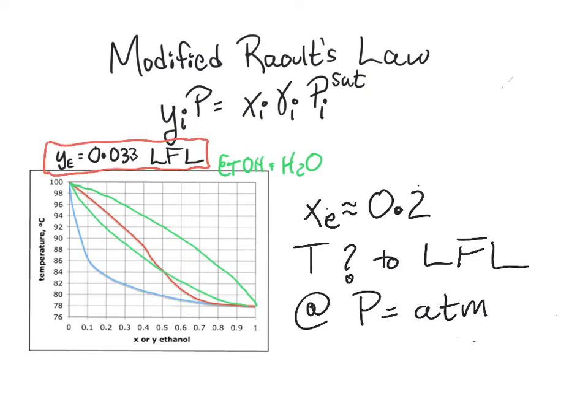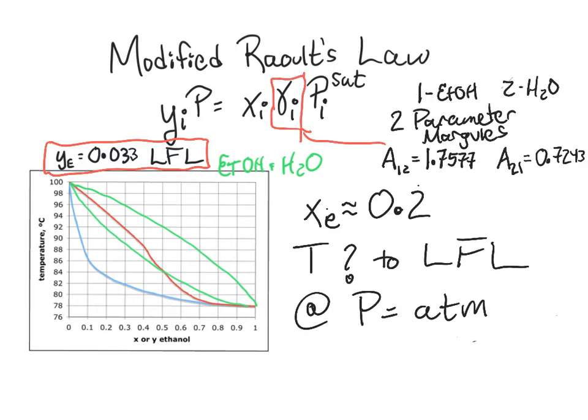And we're going to need some other information to do this because now we've got gamma in the mix. And so we're going to need a way to compute gamma. So let's use the two-parameter Margules because it's just the easiest thing that we could possibly do, just about, as how we figure out gamma. And so the question I have for you here is,